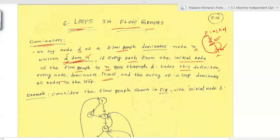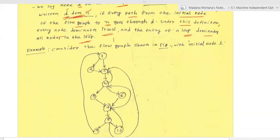Under this definition, every node dominates itself by default — similar to the epsilon closure of a state in automata theory, where if no transition is labeled epsilon, the epsilon closure of that state is the state itself. Similarly, every node in the flow graph dominates itself, and the entry of a loop dominates all nodes in the loop.